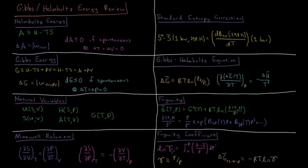The natural log of the fugacity coefficient is zero for an ideal gas, so any non-zero value indicates non-ideal behavior. It can be calculated by integrating the compressibility factor Z — which is PV̄/RT — minus one, divided by pressure, from zero up to the given pressure. The change in molar Gibbs energy going from a real to an ideal gas equals negative RT times the natural log of the fugacity coefficient.